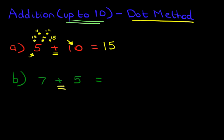Which number is larger? Well 7 is larger. Therefore we're going to put dots above the smaller number, which is 5. So above 5 we're going to put 1, 2, 3, 4, 5 dots.